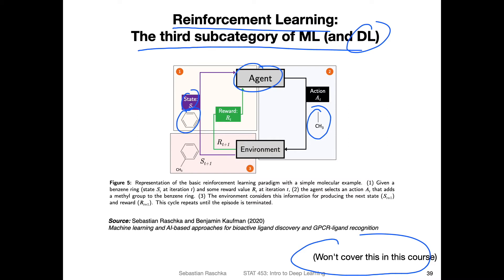This will then update the environment to the new next state, so we'll have the benzene ring with a methyl group attached. The agent is the part of the reinforcement learning program that updates the current state, and it has access to the environment. It takes one of the possible actions, and there will also be a reward for taking the action and modifying this environment. This goes over multiple rounds until you have, for example, a complete small molecule.